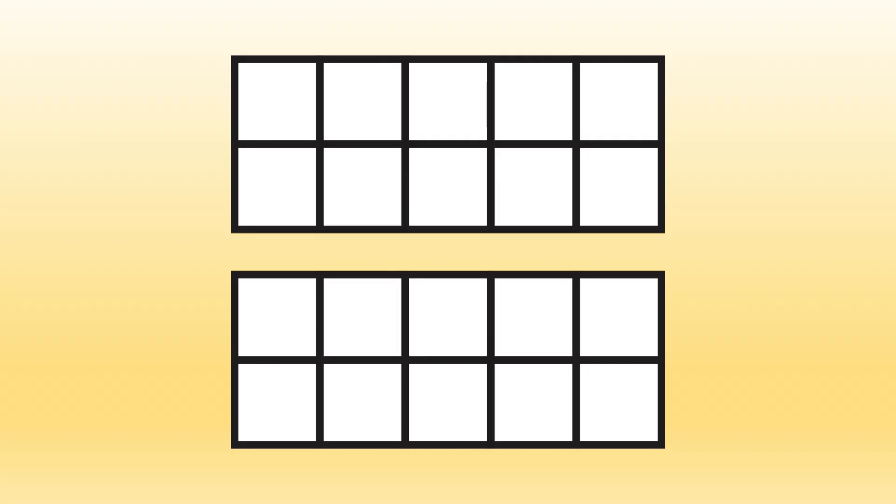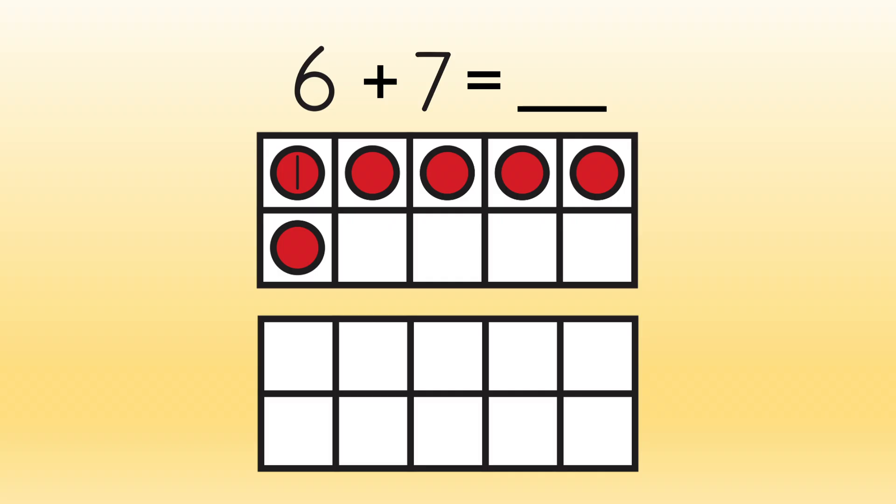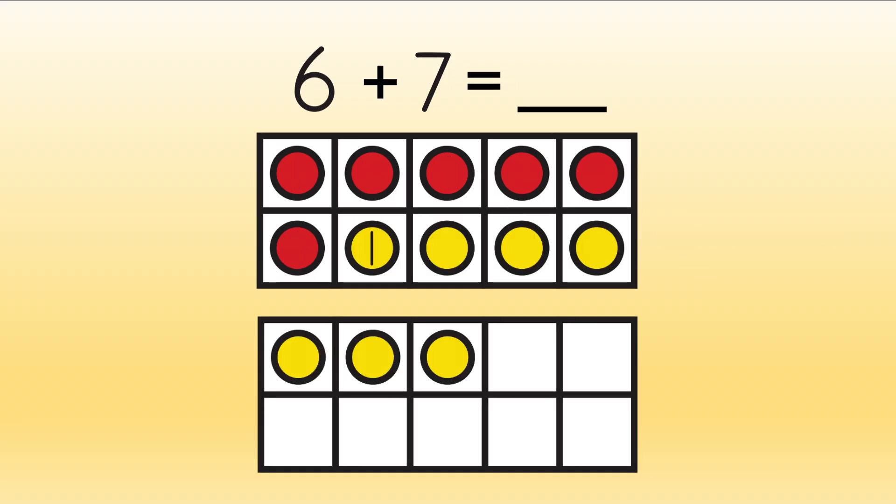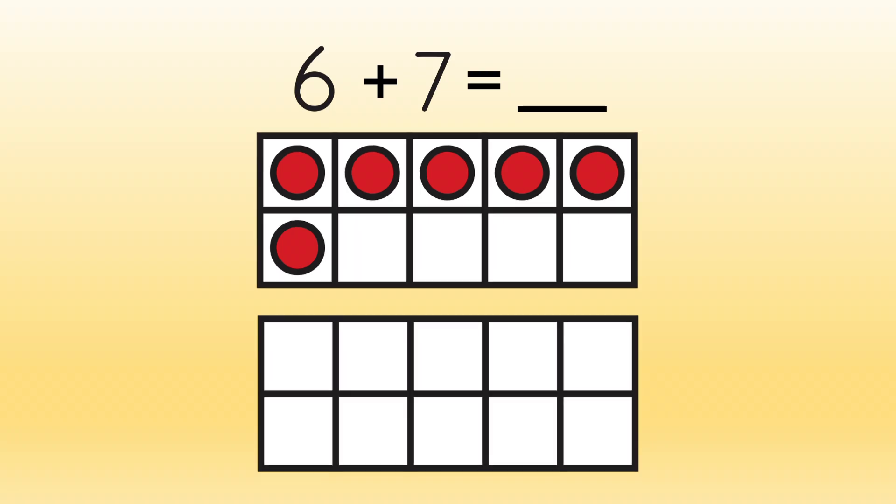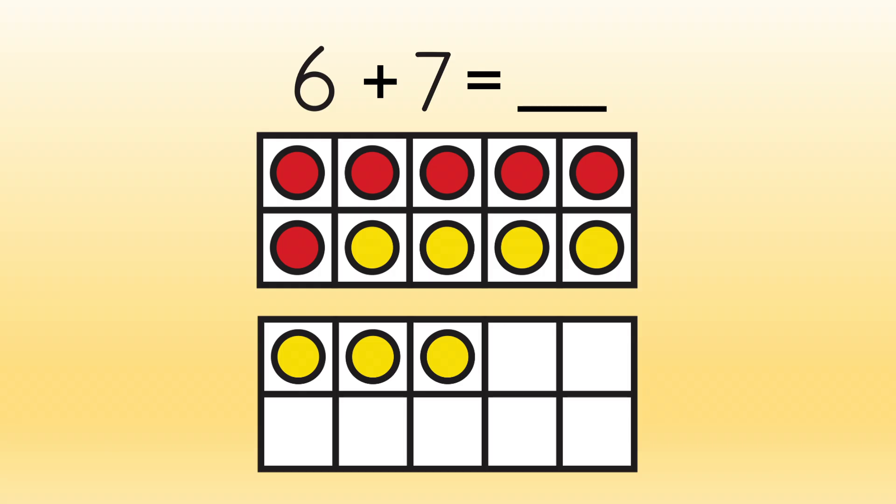Let's start with our first number, six. We'll fill in our frame with markers. One, two, three, four, five, six. And now we need to add seven. Complete the first frame and move on to the second frame like this. One, two, three, four, five, six, seven. We've got our six. We've added our seven. Now we can find the sum.